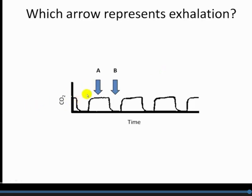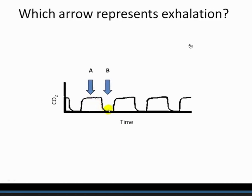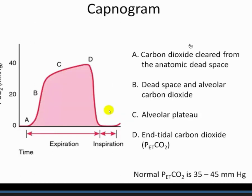Looking at the capnogram over time: CO2 concentration is measured as the patient breathes. When the patient exhales, CO2 is detected by the machine, producing a peak. When they breathe in — inhaling air high in oxygen and low in CO2 — the signal drops back down. Exhalation is represented by the rising peak (point A), not by the drop (point B). Exhalation is synonymous with blowing out CO2 through the device, while inspiration — with high oxygen but low CO2 — brings the signal back down.